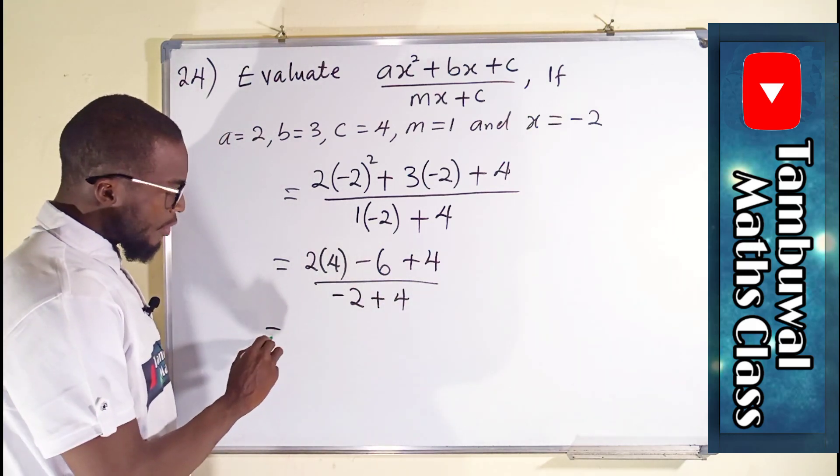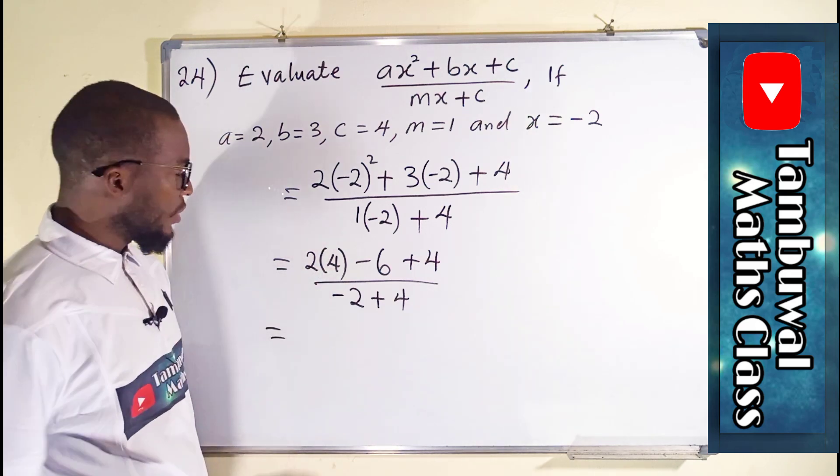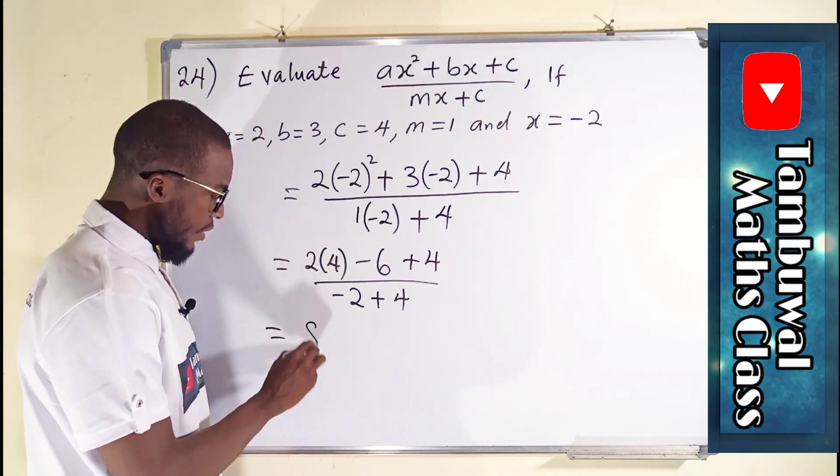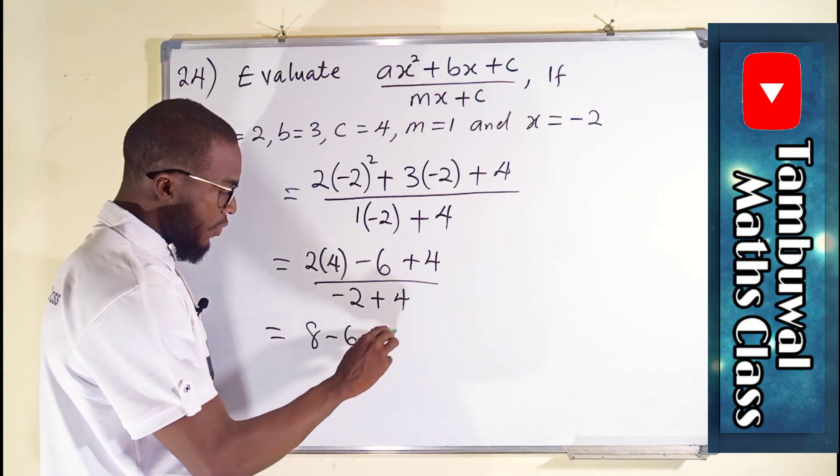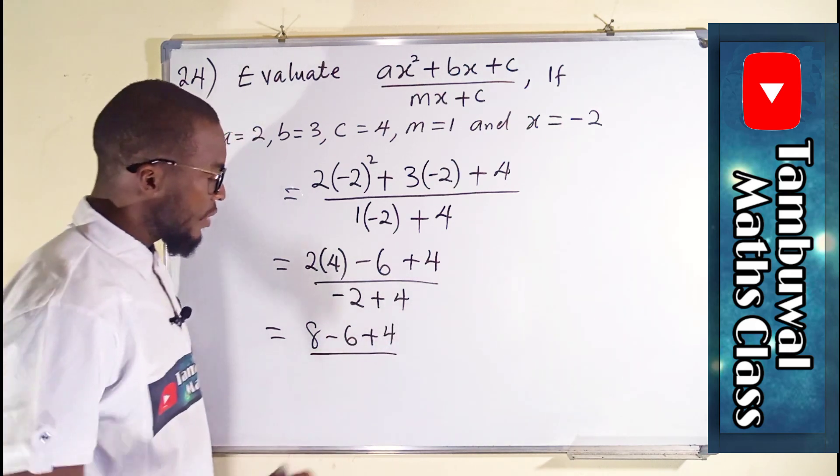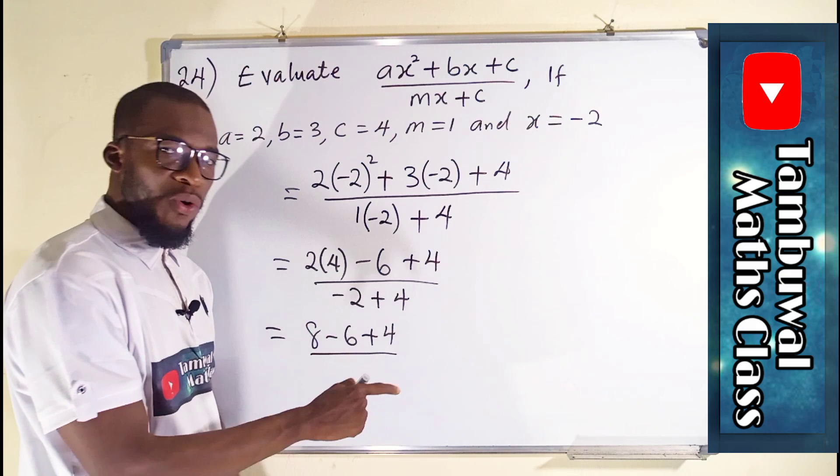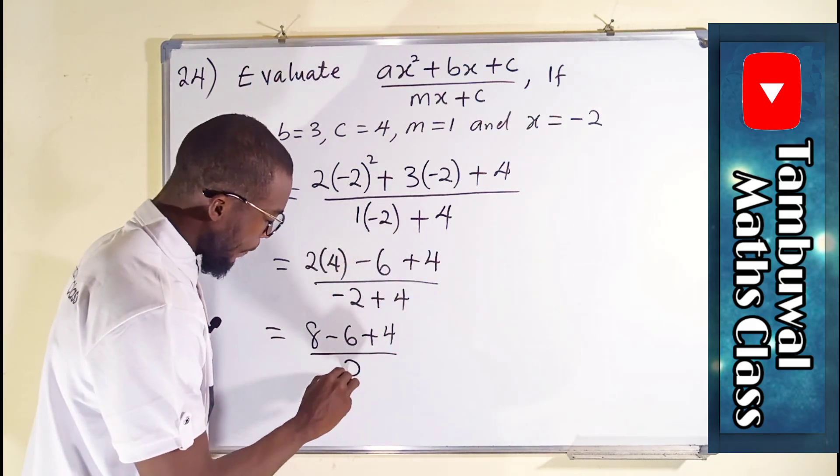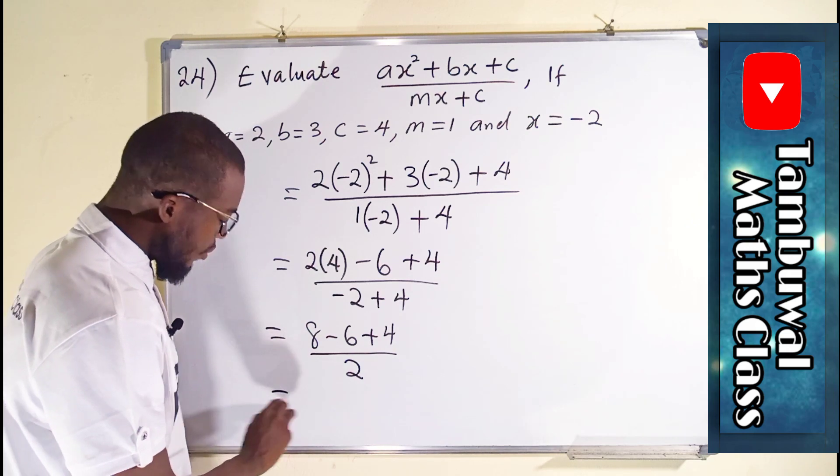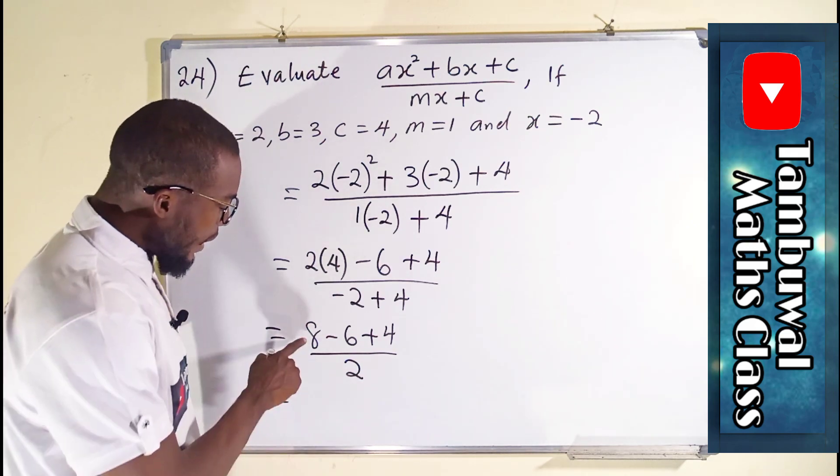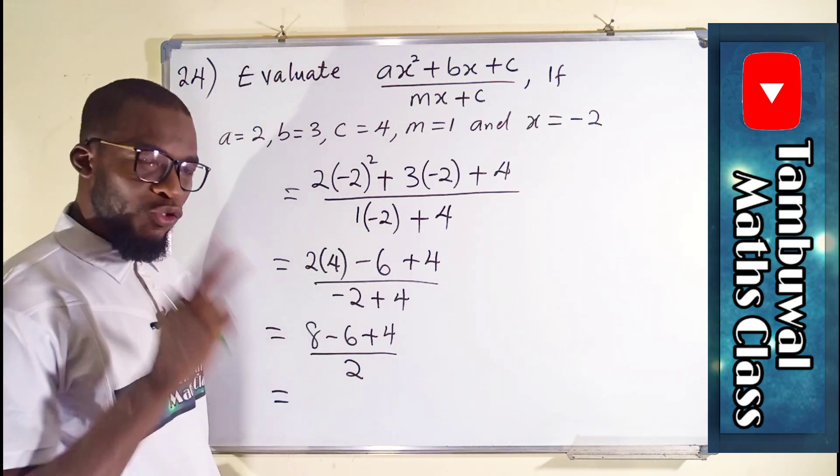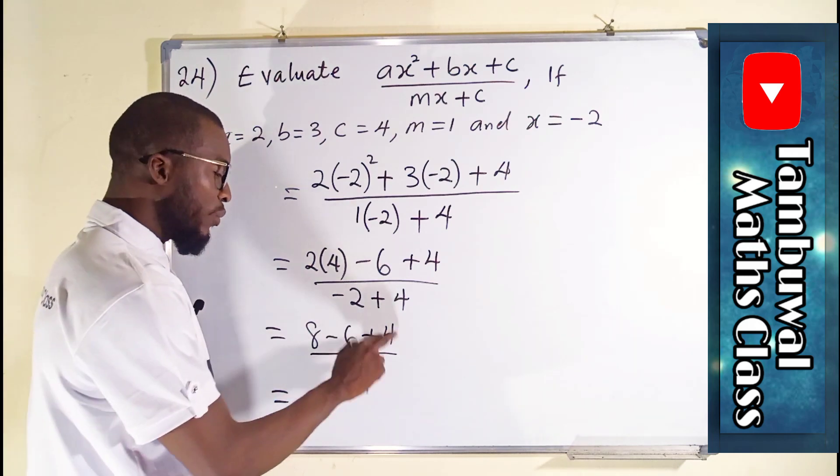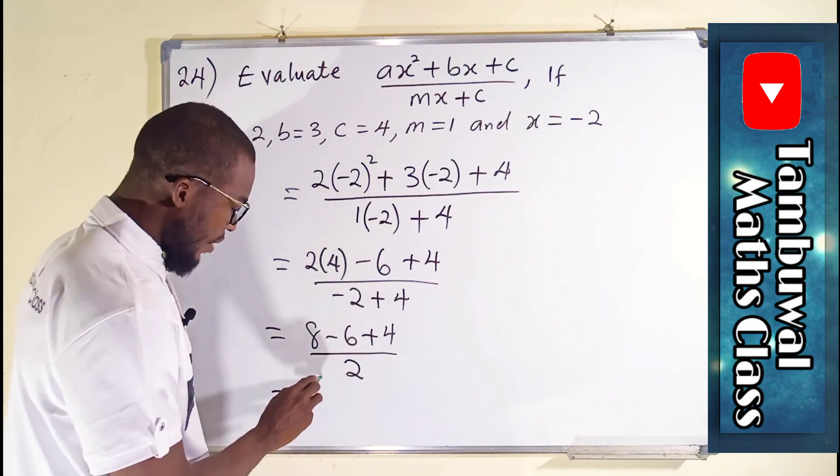Let us further simplify. 2 times 4 is 8 minus 6 plus 4, all over minus 2 plus 4, which is the same thing as saying 4 minus 2, which is 2.